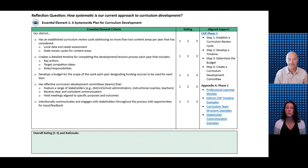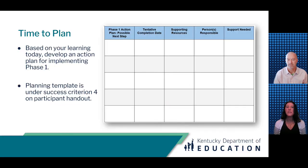To help you determine possible next steps, we recommend that you complete the first section of the CDP self-assessment tool focused on Essential Element 1: a system-wide plan for curriculum development. The element is broken down into specific criteria with a rating scale from 1 — not present in our district — to 3 — fully present and systematic in our district. This may help you pinpoint specific aspects of Phase 1 to prioritize in your action plan. With your district teams, begin thinking about possible next steps, completion dates, supporting resources, responsibilities, and support you'll need for implementing Phase 1. The planning template is located under success criterion 4 on your participant handout.